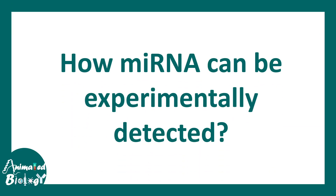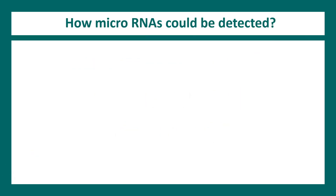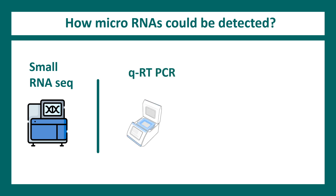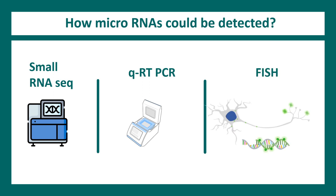Micro-RNAs can be studied experimentally in several ways. They can be detected using small RNA sequencing, though that is expensive. If you need to study only a few micro-RNAs — say 4 to 5 — quantitative real-time PCR is a sensitive and practical alternative. Fluorescence in-situ hybridization (FISH) can show the intrinsic localization of a particular micro-RNA inside a cell.